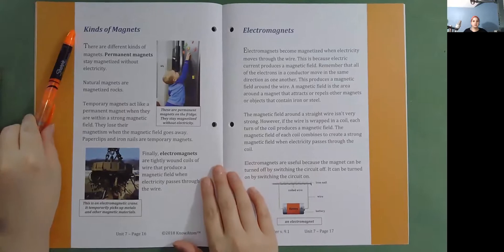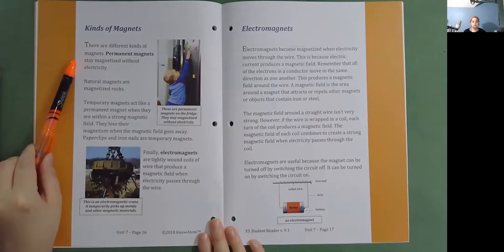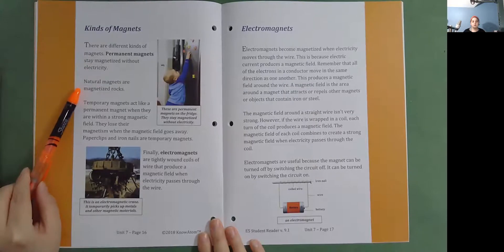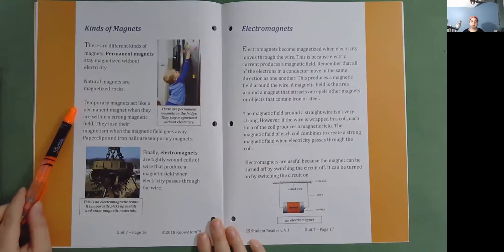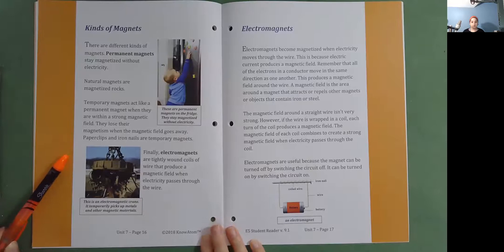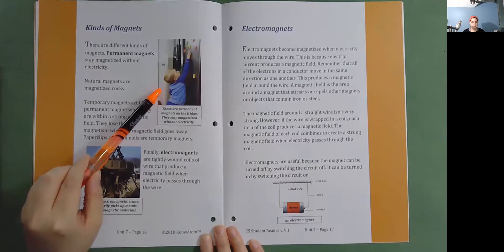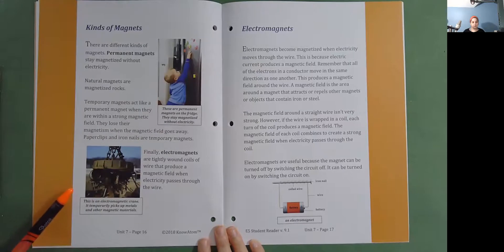Kinds of magnets. There are different kinds of magnets. Permanent magnets stay magnetized without electricity. Natural magnets are magnetized rocks. Temporary magnets act like a permanent magnet when they are within a strong magnetic field. They lose their magnetism when the magnetic field goes away. Paper clips and iron nails are temporary magnets. Finally, electromagnets are tightly wound coils of wire that produce a magnetic field when electricity passes through the wire. These are permanent magnets on the fridge. They stay magnetized without electricity. This is an electromagnetic crane. It temporarily picks up metals and other magnetic materials.